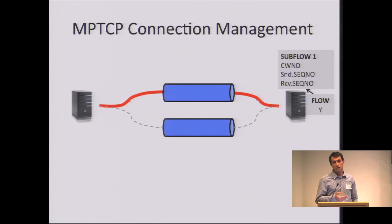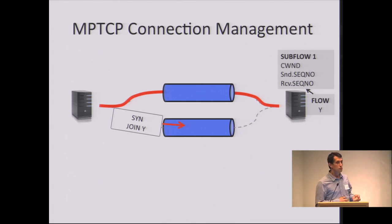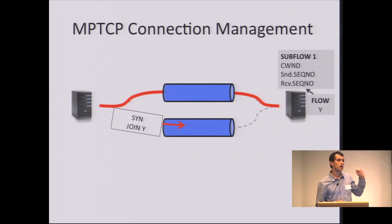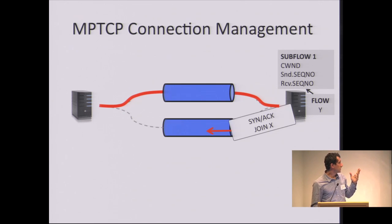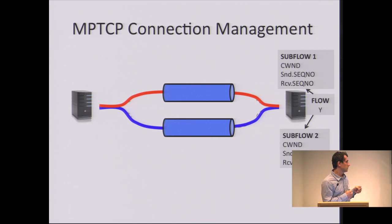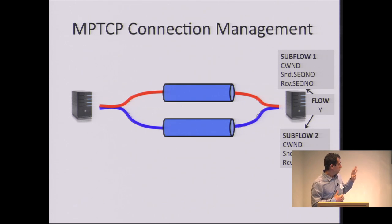If you get a new path — a new Wi-Fi or 3G interface — the client sends a JOIN using that new address. It looks like a regular TCP handshake but with new options. The JOIN option tells the server this is part of an existing connection. The server looks up the connection, finds it, and replies with a JOIN and subflow setup. In practice we have HMACs for security — we don't want anyone to just send a JOIN and join an MPTCP connection.